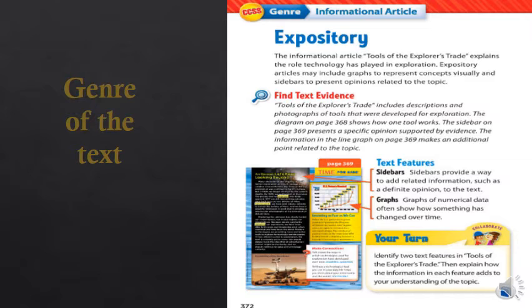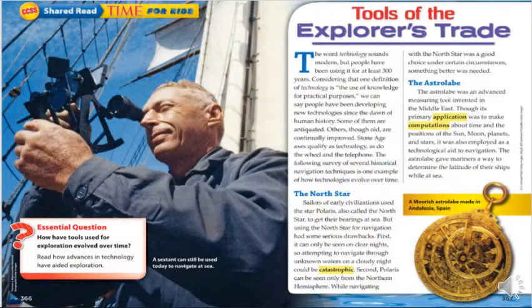The genre of this text is expository. As we have explained before, expository means informational — the text is giving us information. This is our lesson and the title is 'Tools of the Explorer's Trade.' The essential question is: how have tools used for exploration evolved over time? We will read this selection to see how they helped scientists.